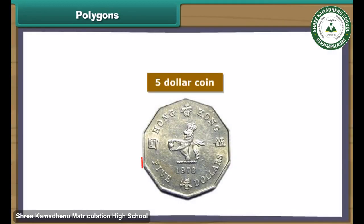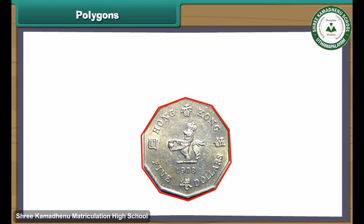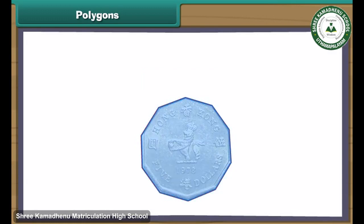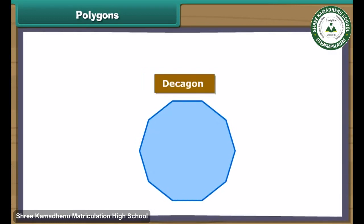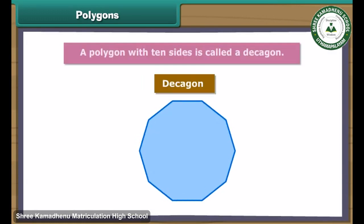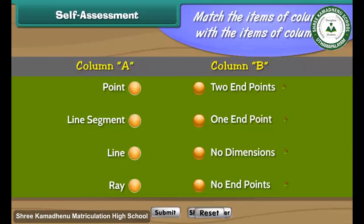Here is an old five-dollar coin from Hong Kong. It has ten sides. A polygon with ten sides is called a decagon.